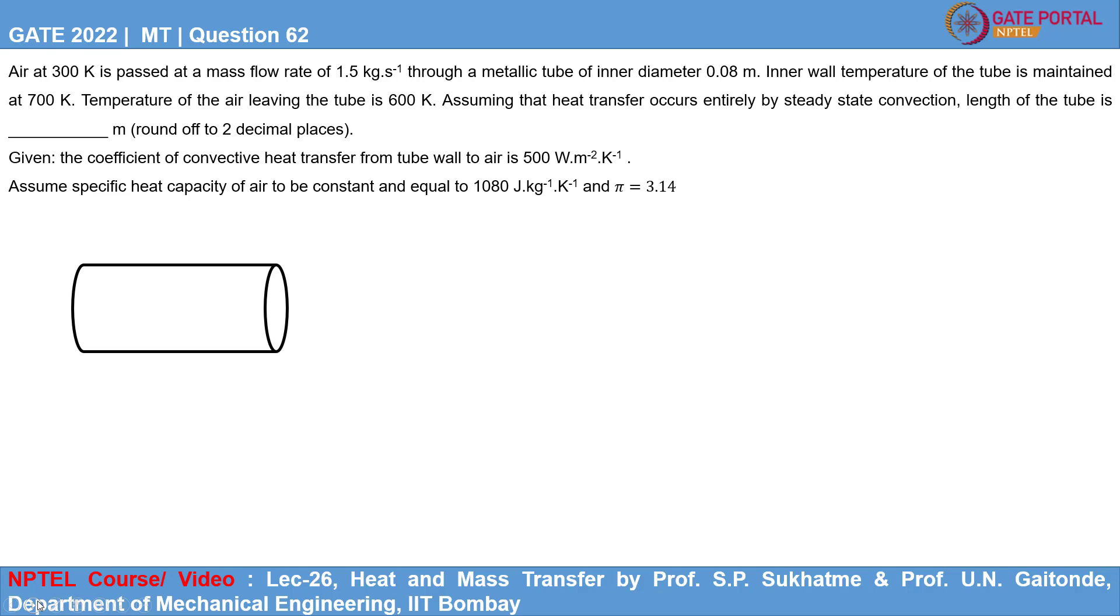Assuming that heat transfer occurs entirely by steady state convection, I must highlight this, the length of tube needs to be determined. What is given is the coefficient of convective heat transfer rate from tube wall to the air is 500 Watt per meter square Kelvin. We can assume heat capacity of air to be constant and equal to 1080 joule per kg Kelvin and pi is 3.14.